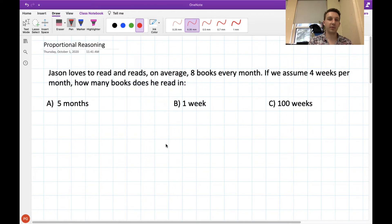This is an example of a question where we could use proportional reasoning. Jason loves to read and on average reads 8 books every month. If we assume 4 weeks per month, how many books does he read in 5 months, 1 week, or 100 weeks?